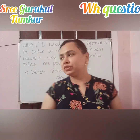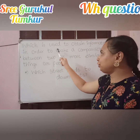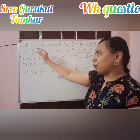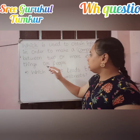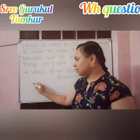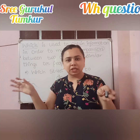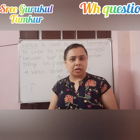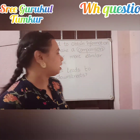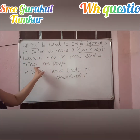The next question tag is 'which' (W-H-I-C-H). Which is used to obtain information in order to make a comparison. If we are comparing two things or two persons, we use 'which'. For example, 'Which street leads to downtown?' — if there are two streets, left, right, or straight. Or 'Which pen do you like?' So 'which' is used to obtain information in order to make a comparison between two or more similar things or people.